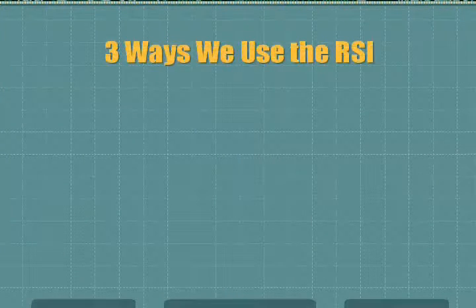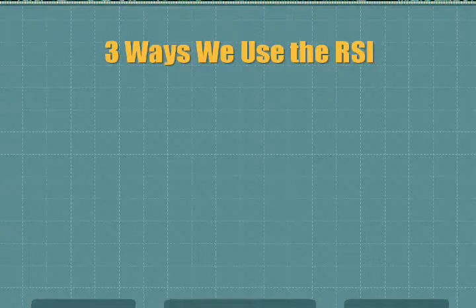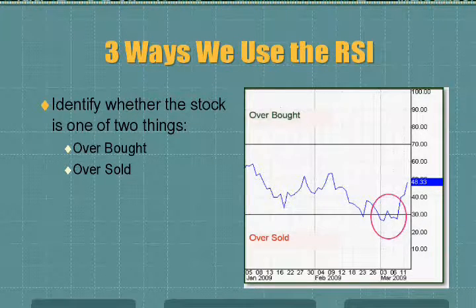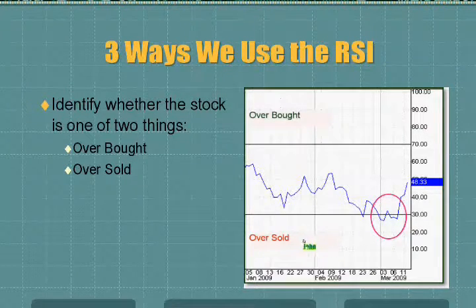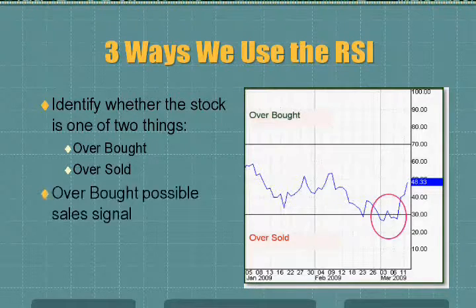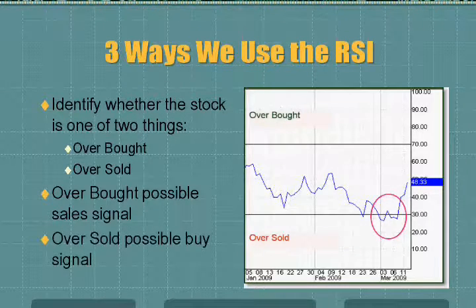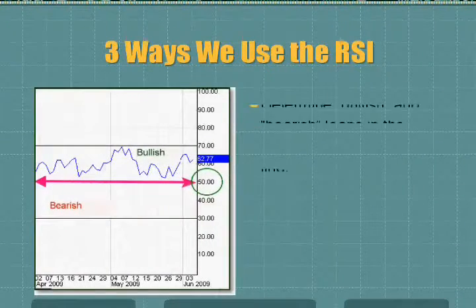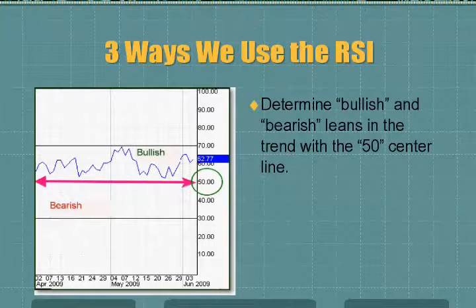Three ways to use the RSI. We're going to identify whether the stock is overbought or oversold. If it's overbought, that's a possible sale signal. If it's oversold, that will possibly give us a buy signal. The second way, we're going to determine whether it's bullish or bearish — whether the trend is above or below the 50 center line.